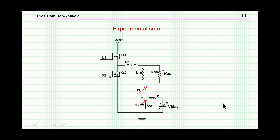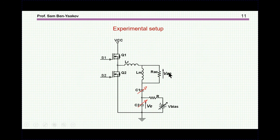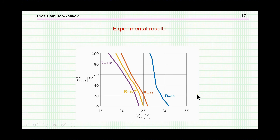To test this idea, we built a circuit that mimics the actual LLC converter — a network with a resistor replacing the transformer, rectifier, and so on. The bias of the capacitor was changed using a voltage source in series with a large resistor to avoid loading the AC path. By changing this voltage, you change the bias, which changes the resonant frequency, and therefore the transfer function between input and output.